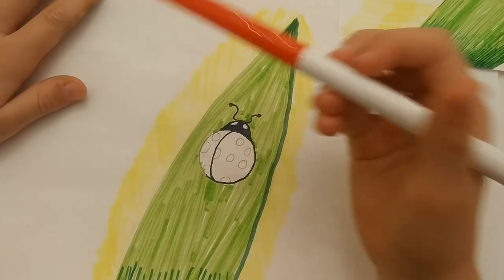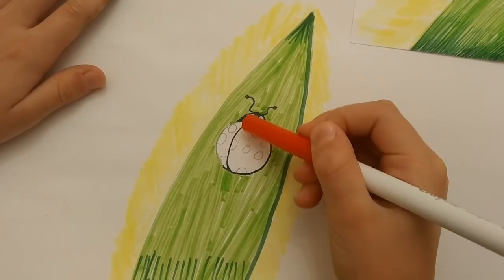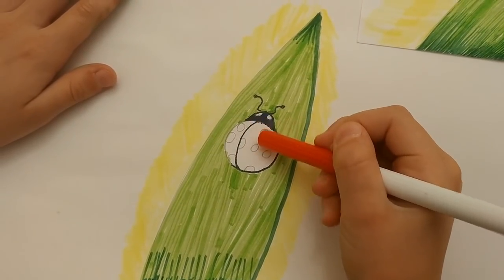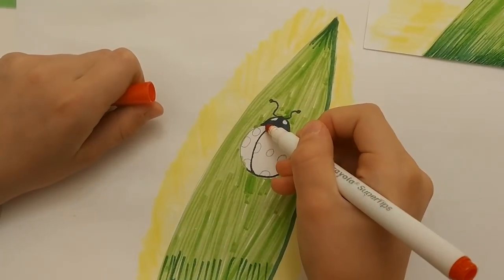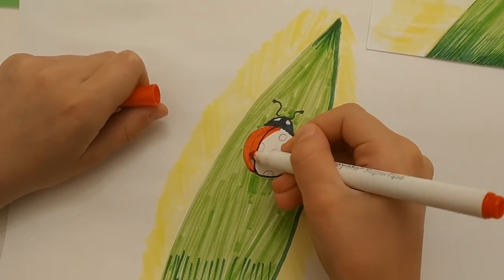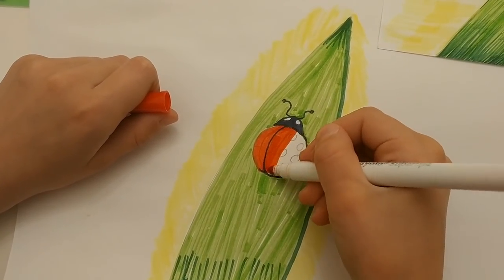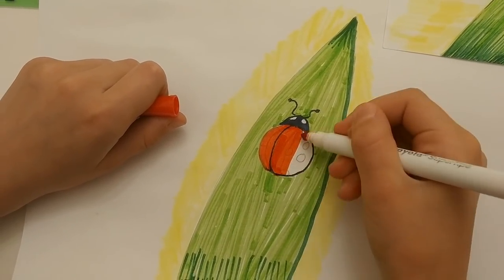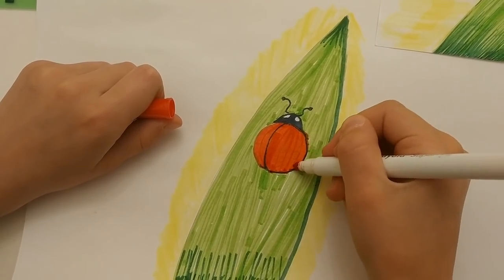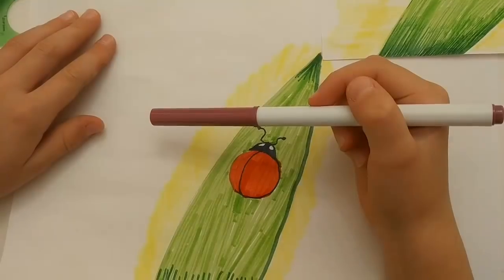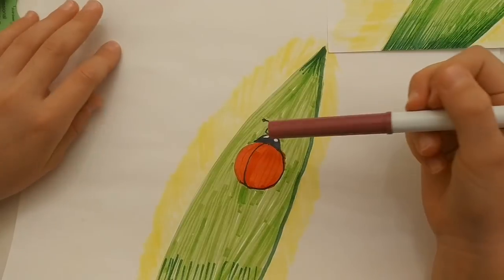Use red to color the ladybug's body. Make arching lines, then straighten them and make them arch at the other side. Use purple to create some volume.